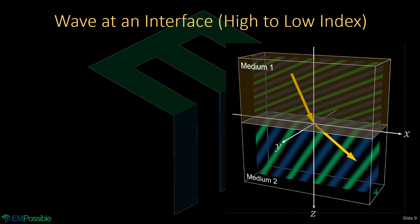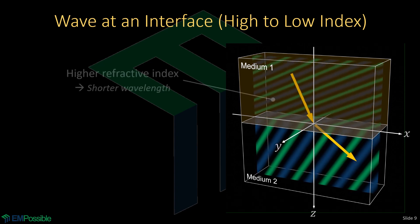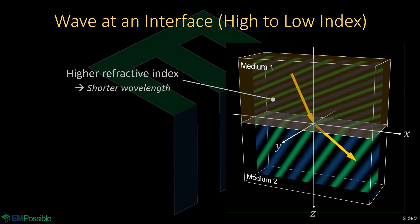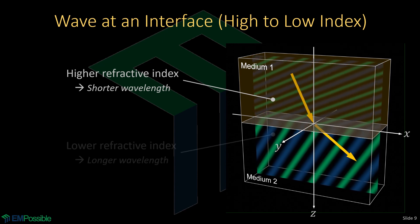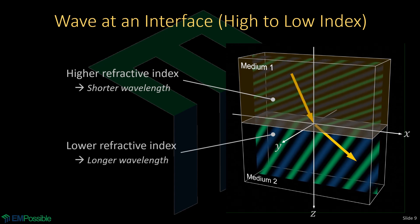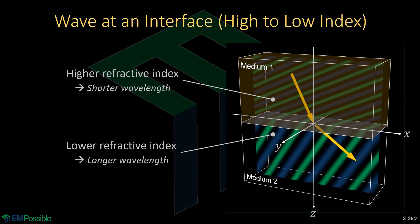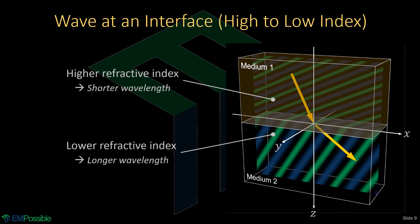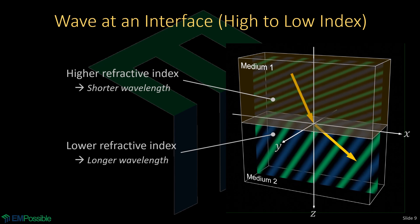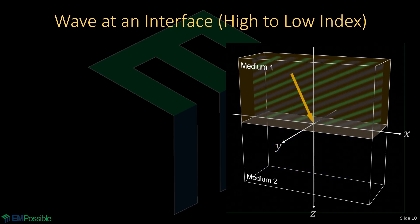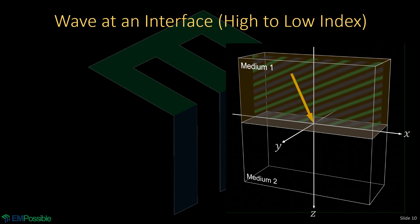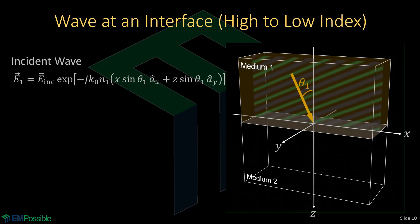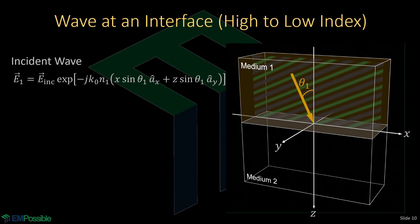Let's turn the situation around. Now medium one has the higher refractive index, so the wave travels more slowly and the wavelength is compressed or shorter. Medium two now has the lower refractive index, so the wave travels faster with a more stretched-out, longer wavelength. We've simply swapped which side has the higher refractive index. Let's repeat the analysis, focusing on the incident wave now in the higher refractive index medium at some angle theta one, and we can write the same expression for it.